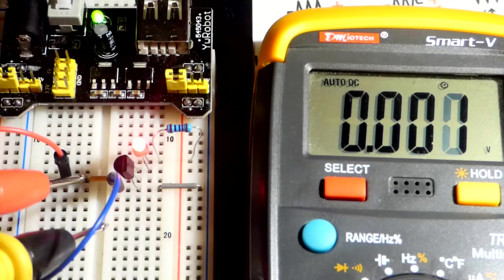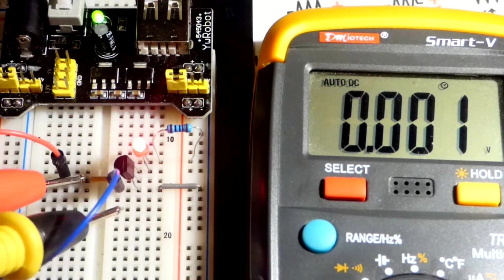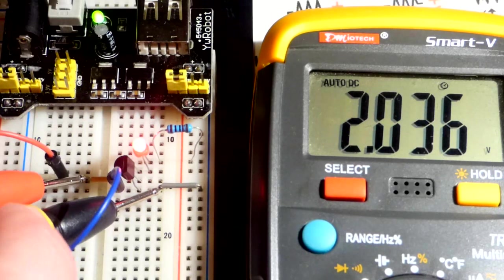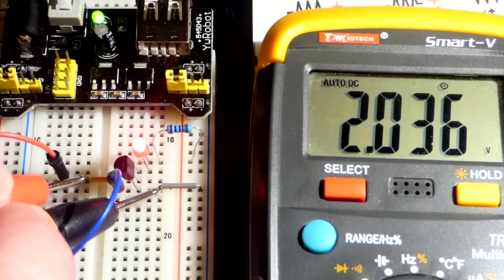Now we're going to look at the voltage at the gate. So that jumper goes to the middle pin, the gate. And there you can see we have 2 volts right now.